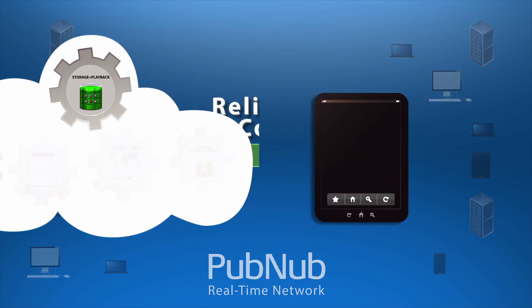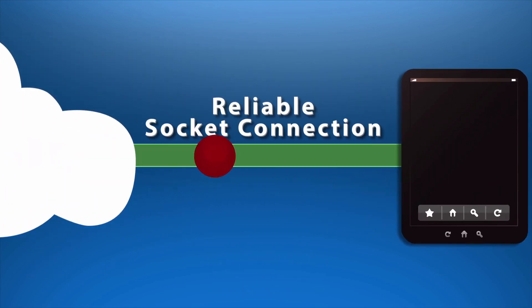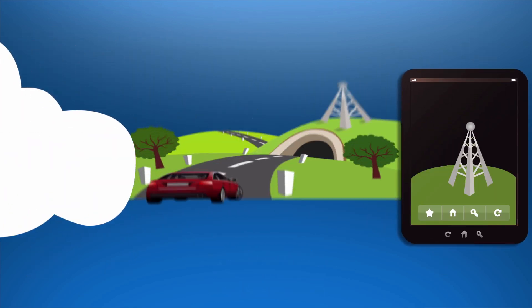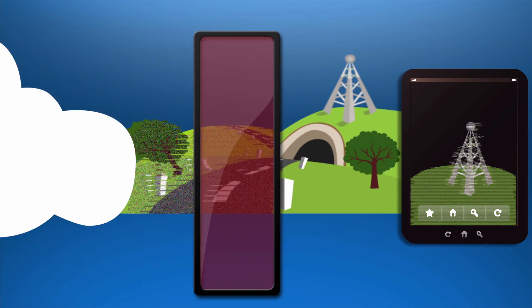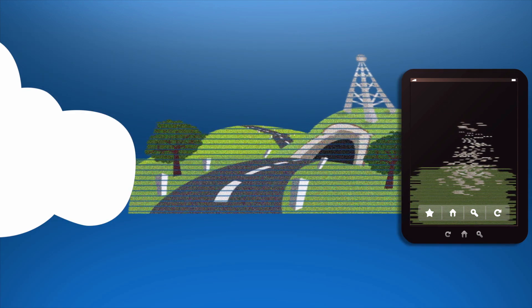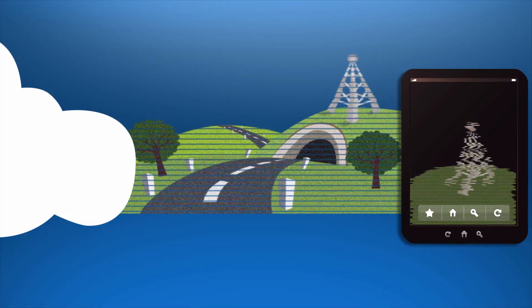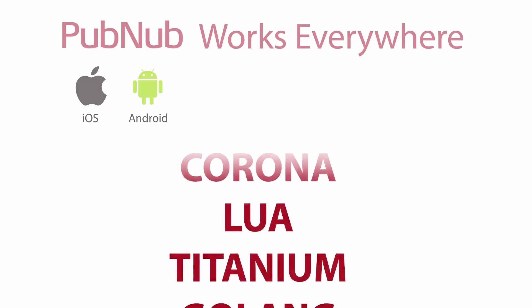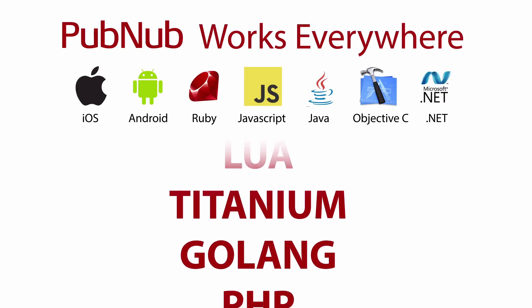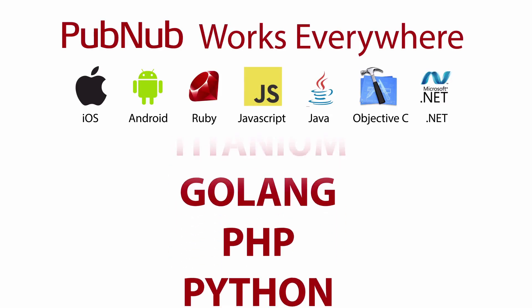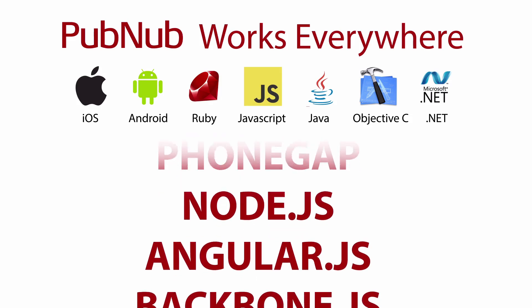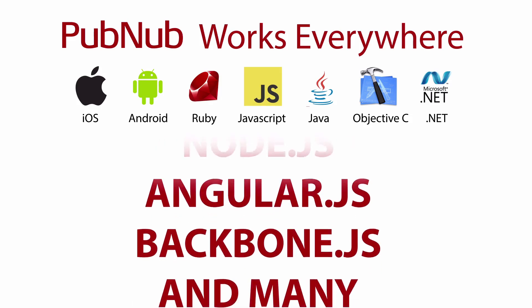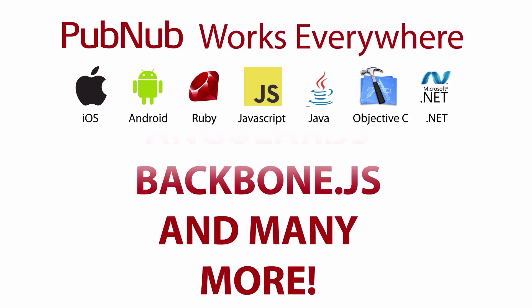We pick the right network protocols so you don't have to, making sure your real-time app works, even in complex and unreliable environments. PubNub is supported everywhere, with over 50 SDKs for smartphones and tablets, browsers, desktops, embedded devices, and servers.